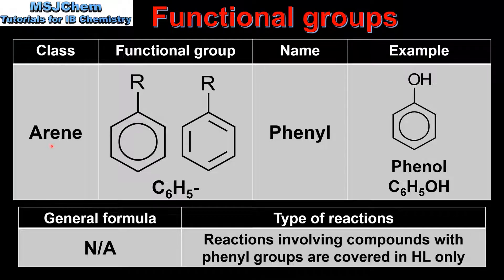Next we look at arenes, which are also known as aromatic compounds. The class name is arene and the functional group name is phenol. The phenol functional group can be thought of as a benzene molecule minus a hydrogen atom. The hydrogen atom has been replaced with a substituent group, shown here as R. An example is phenol. In phenol the substituent group is a hydroxyl group, so the two functional groups in phenol are a phenyl functional group and a hydroxyl functional group. Reactions involving compounds with phenyl groups are covered in higher level only, such as the reduction of nitrobenzene to form phenolamine.